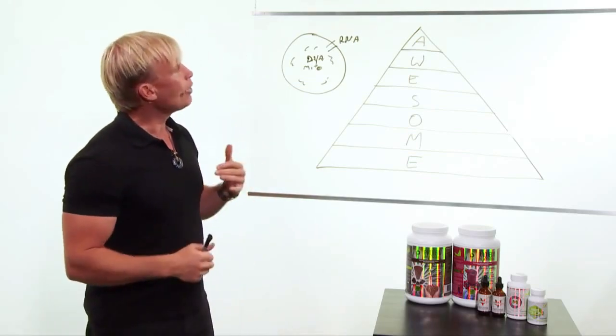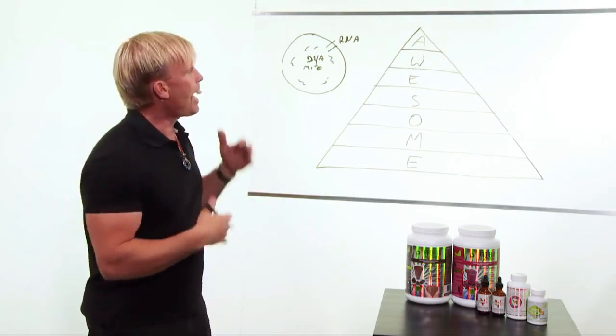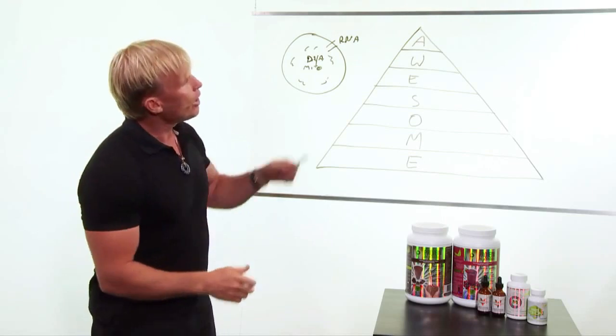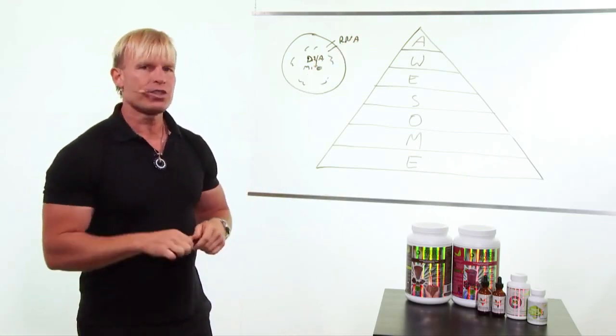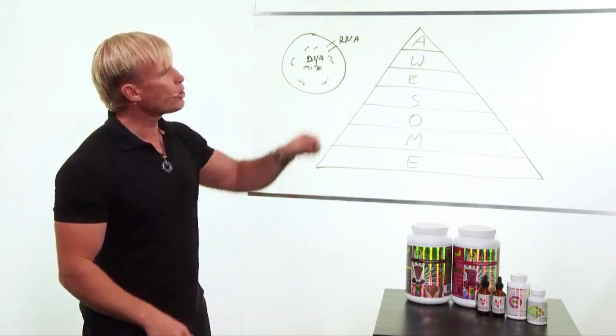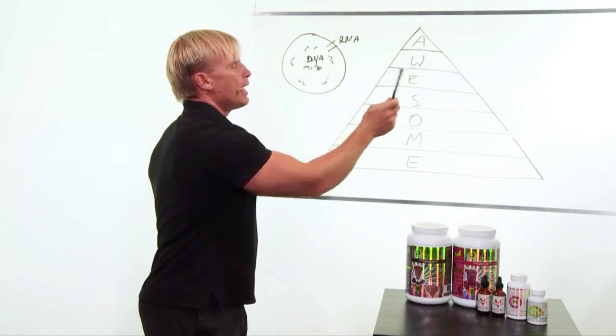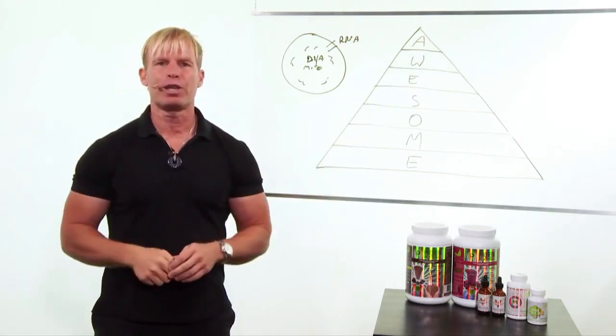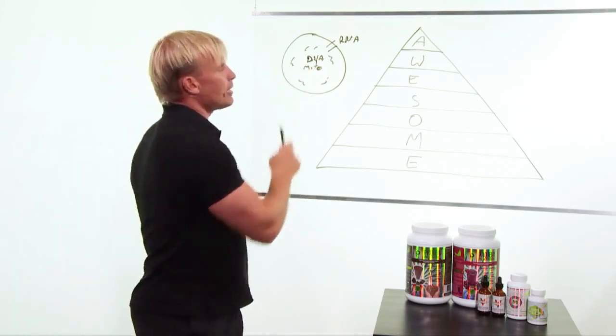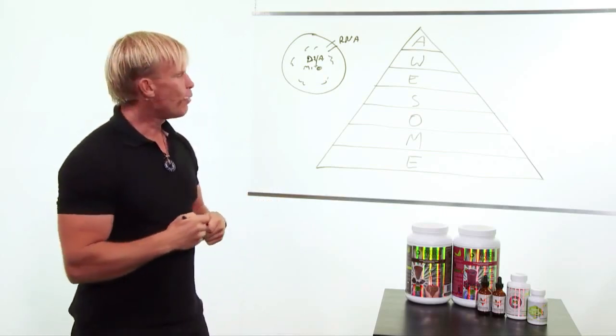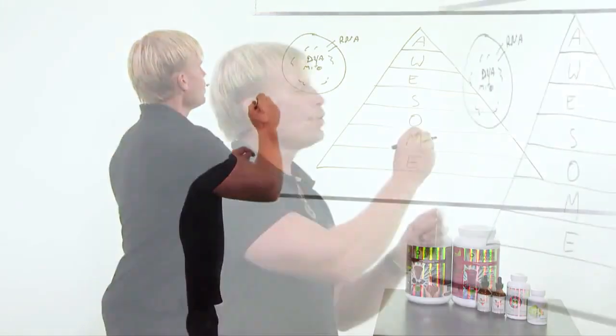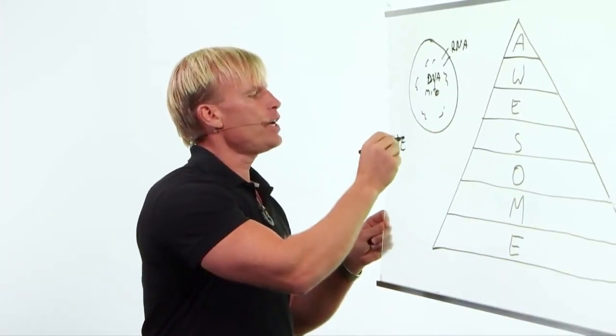When I looked at cellular function, how does it work and why we built the program that we did, I built it on this type of model. What are the essential components that the cell needs to function? Of course, we covered a lot of them. We covered air, water, exercise, and sunlight. Those are the big macro things that everybody needs to get a hold of. But let's look at the basic cell and what it requires. We notice that there's a series of things that is very important.